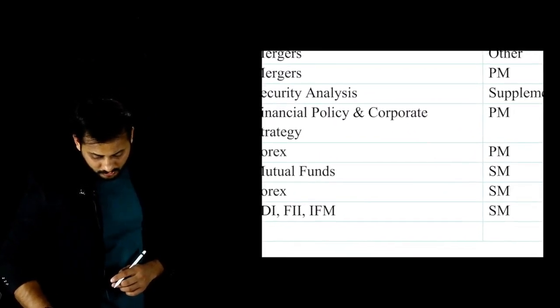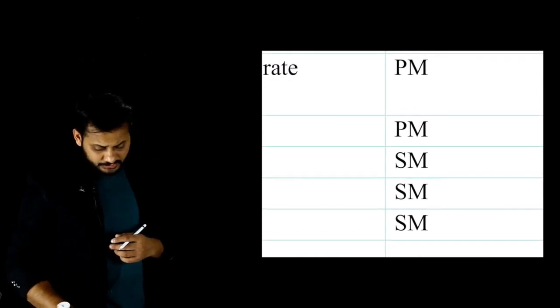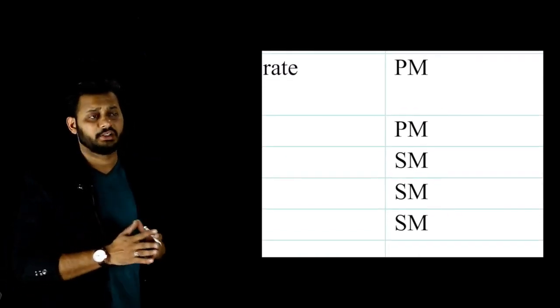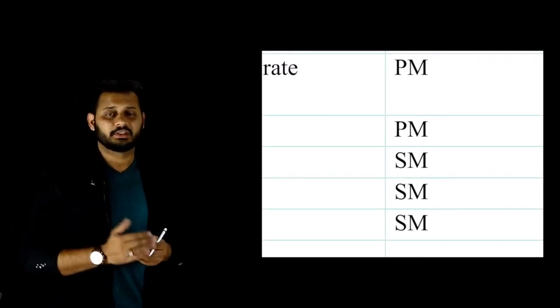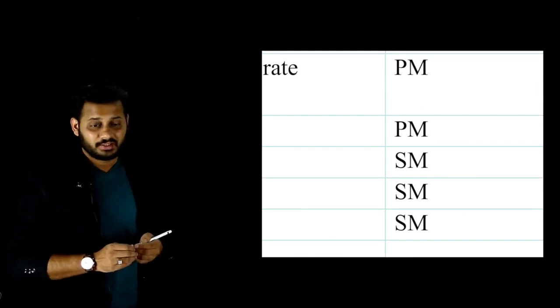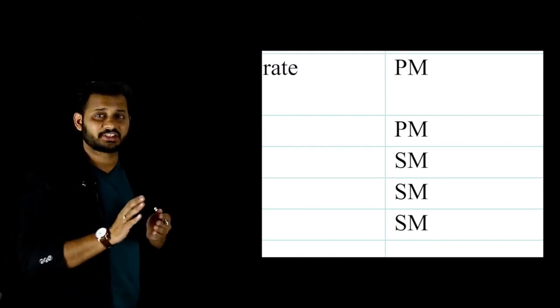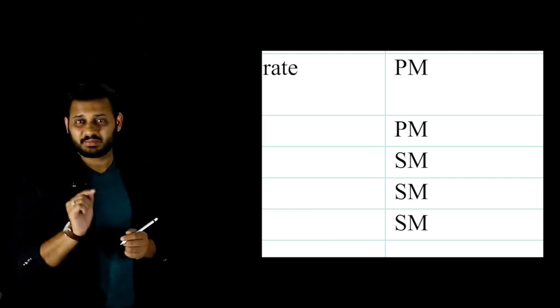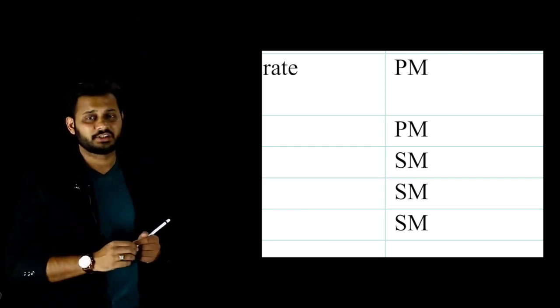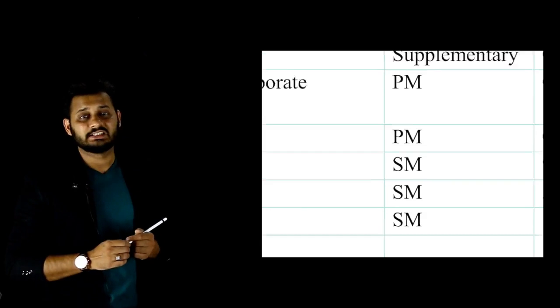So out of four questions of the theory, three are from the study material itself. So Institute has tricked you that if you would not have studied from the Institute's study material, there would have been difficulty solving, writing these theory questions.